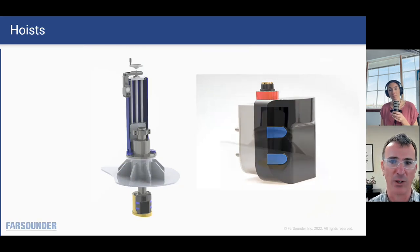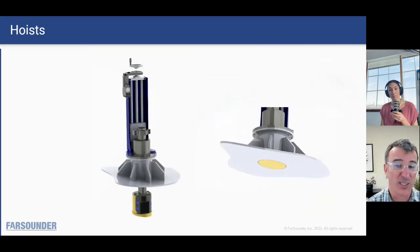This is kind of interesting for high-performance sailing vessels because when you retract the sonar, you can actually have a little fairing disc that will make it flush with the hull lines, and so it makes it really smooth and hydrodynamic.